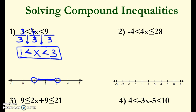For number 2 we have negative 4 is less than 4x which is less than or equal to 28. Same thing — I have 4 times x so I'm going to divide by 4 on all three sides. Negative 4 divided by positive 4 gives me negative 1. I bring down that same inequality sign and I just end up with x in the middle.